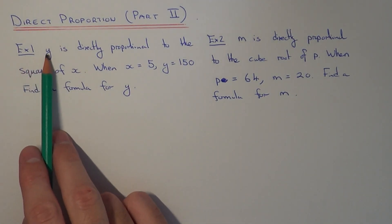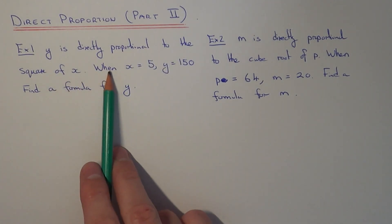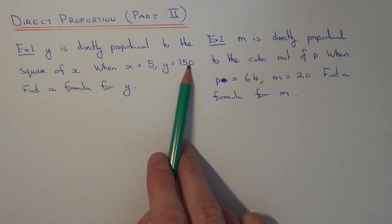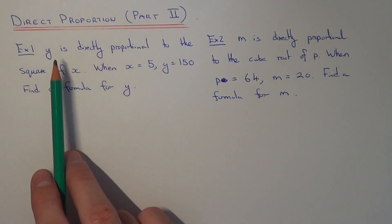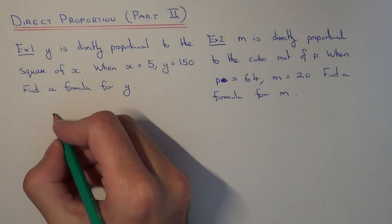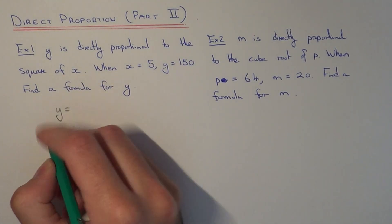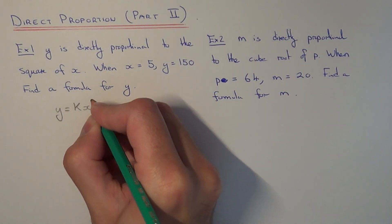Example one: y is directly proportional to the square of x. When x equals 5, y is equal to 150. We need to find a formula for y. Since y is directly proportional to the square of x, this means our formula will take the shape of y equals k times x squared.